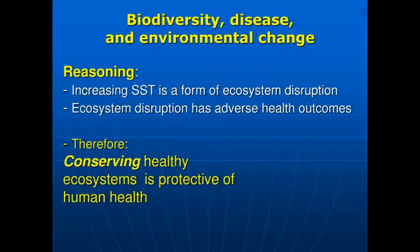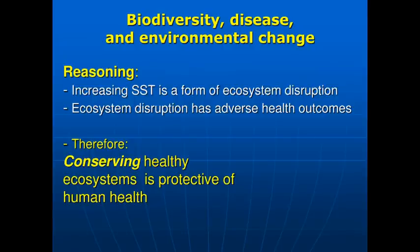In areas with a more stable ocean temperature there is no such relationship at all. The statistics bear out that in the variable area there's a strong relationship between ocean temperature and number of cases of fish poisoning. My conclusion is that sea surface temperature is a form of ecosystem disruption — it's disrupting the reef ecosystem — and if that disruption has adverse health outcomes, then conserving a healthy reef ecosystem is protective of human health.